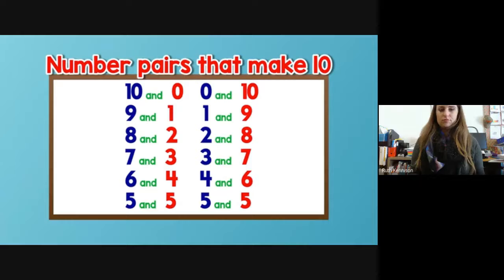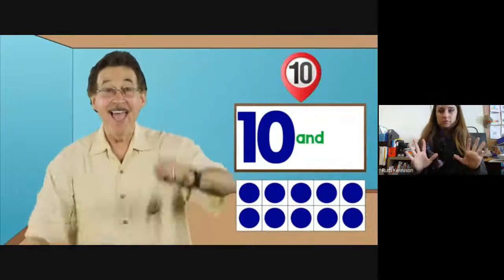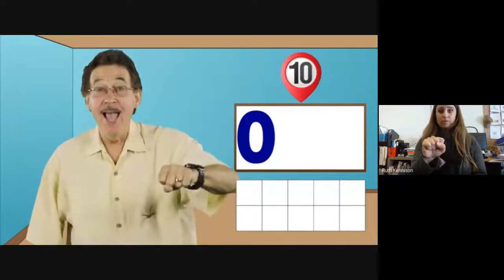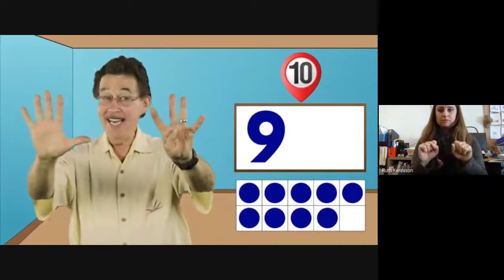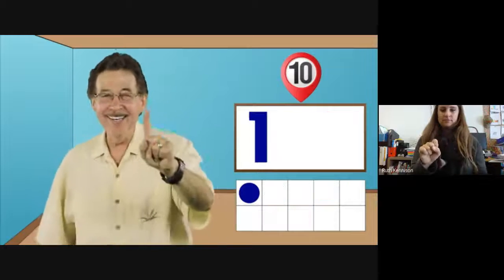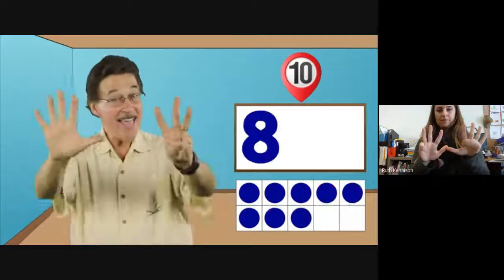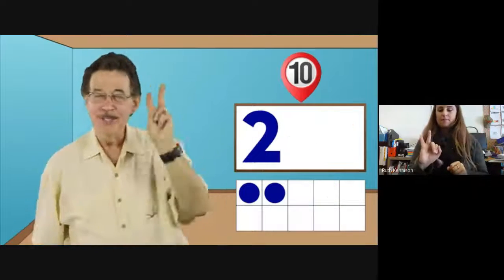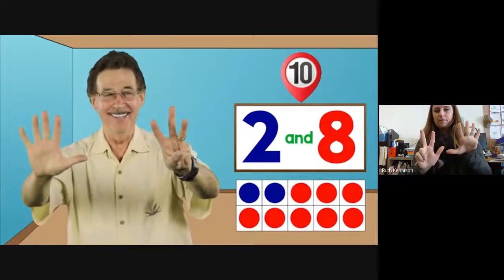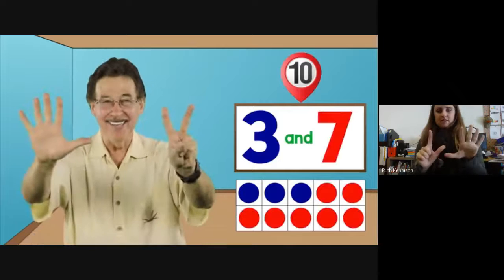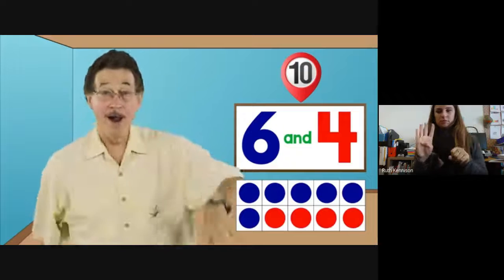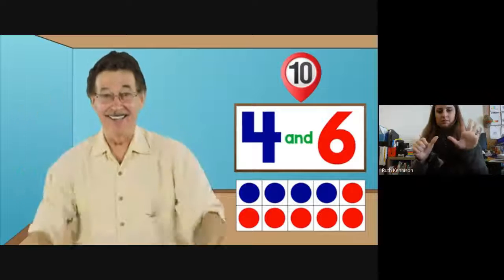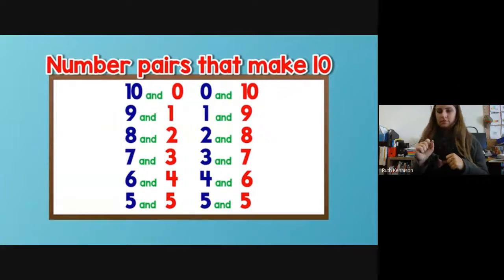A little faster: ten and zero, zero and ten, nine and one, one and nine, eight and two, two and eight, seven and three, three and seven, six and four, four and six, five and five, five and five. Those are the number pairs that make ten.